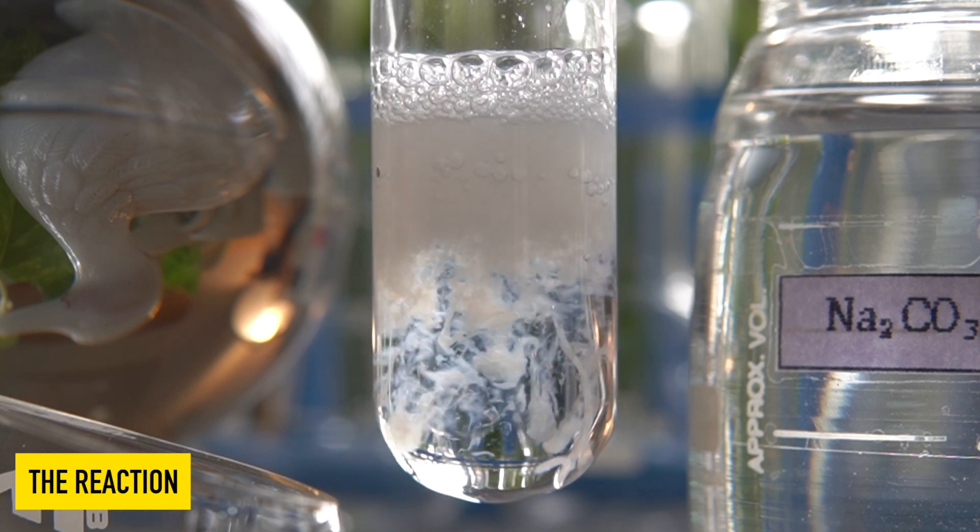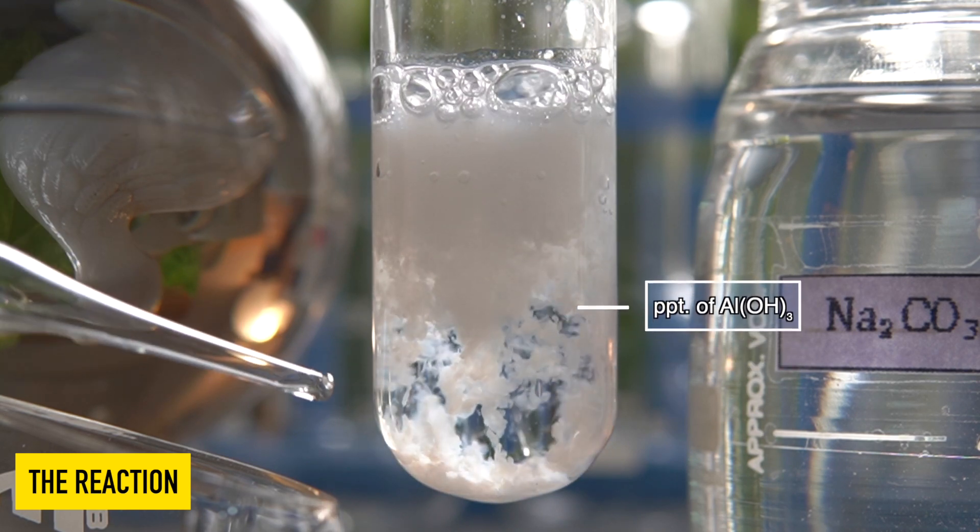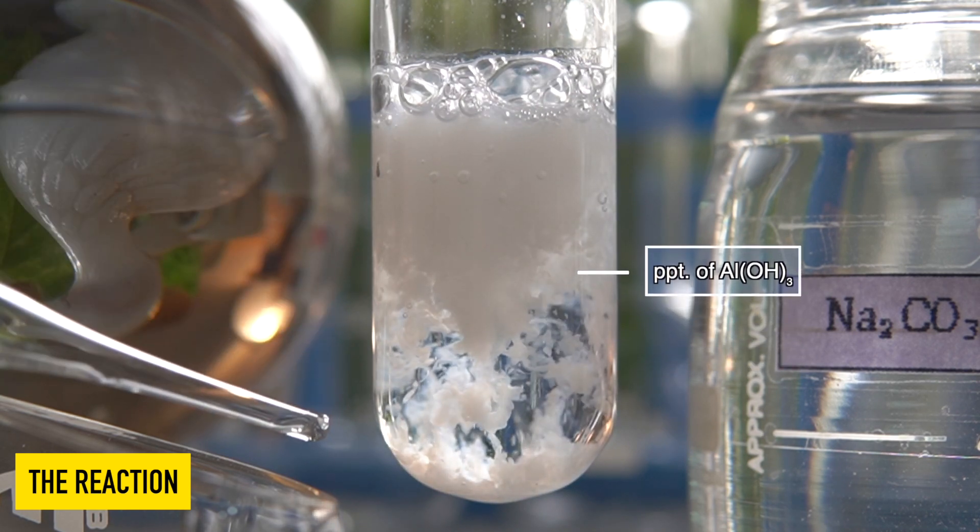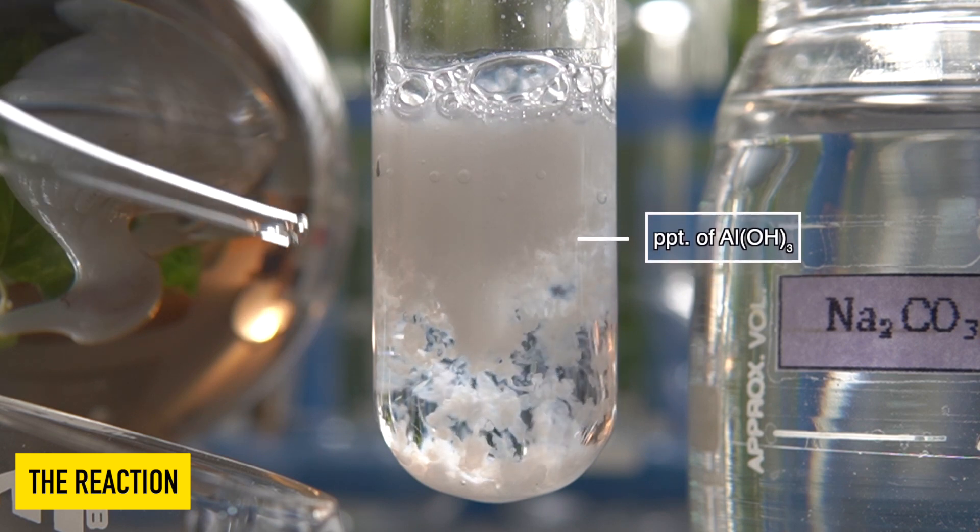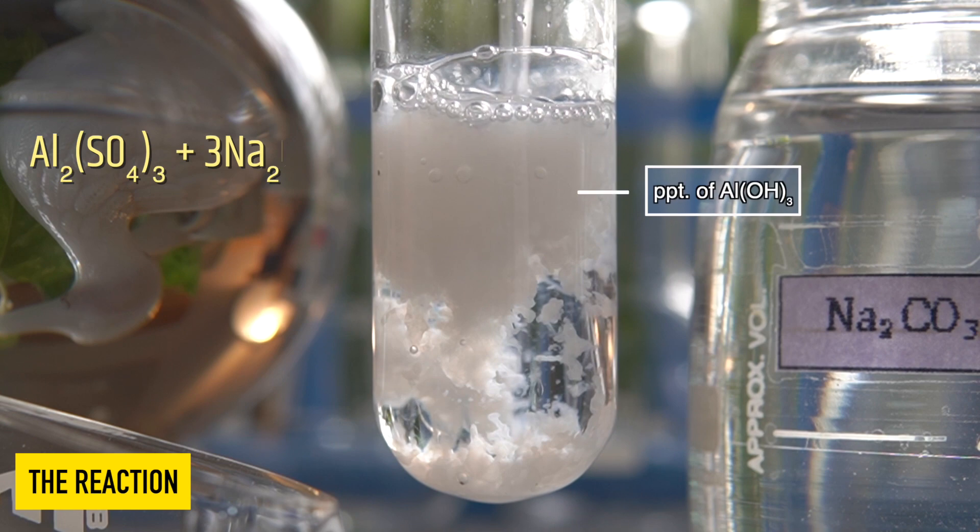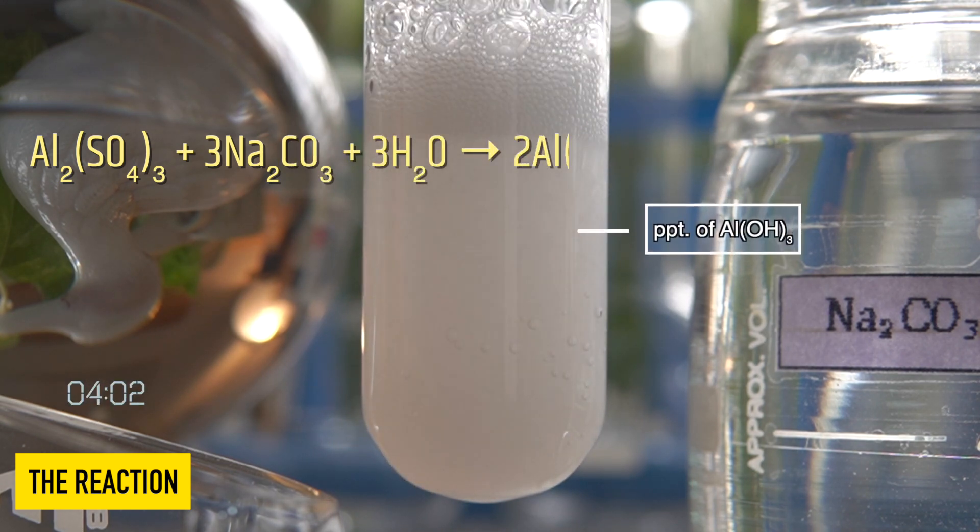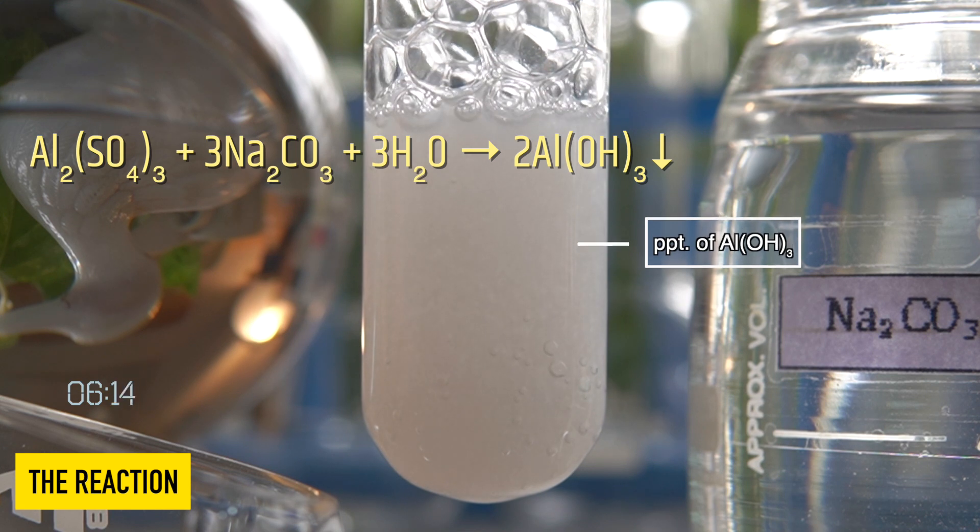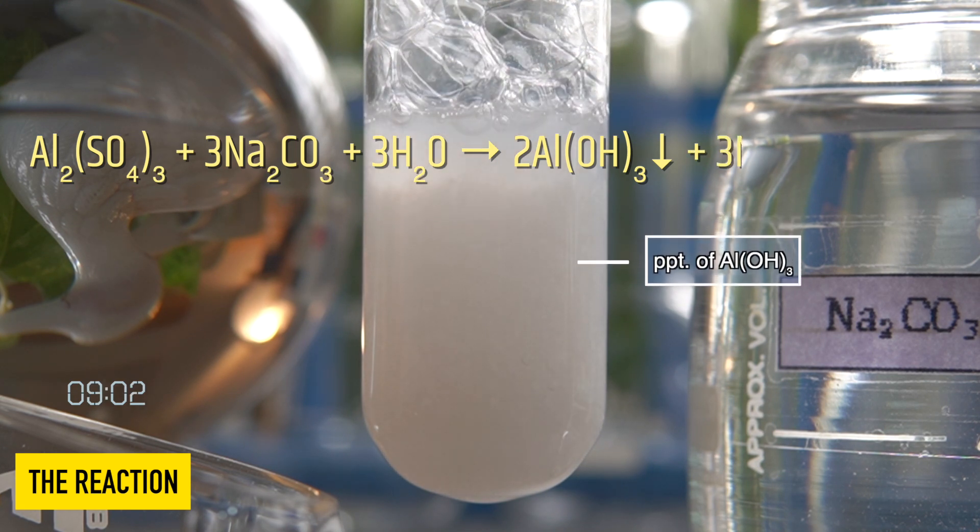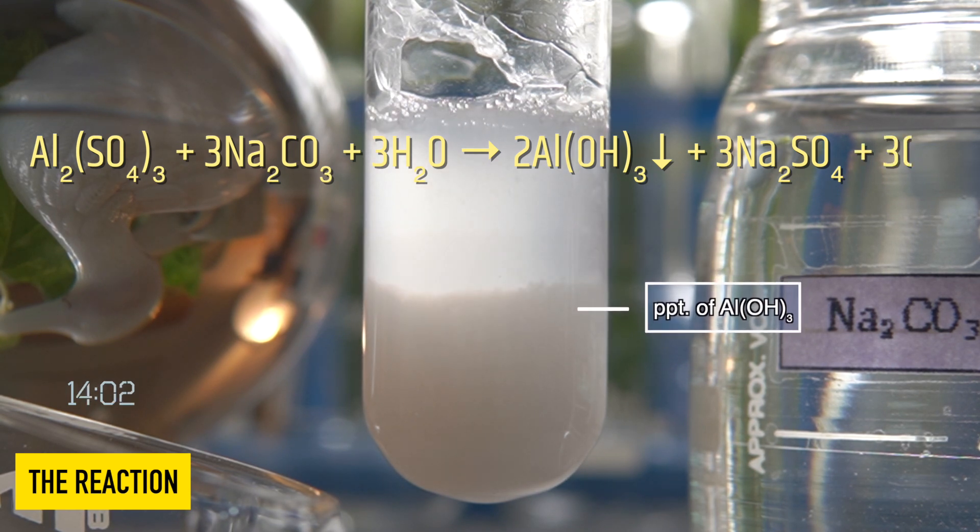The white gelatinous precipitate that has been formed inside the test tube is nothing but aluminum hydroxide. So in this reaction, aluminum sulfate reacts with sodium carbonate to produce a white gelatinous precipitate of aluminum hydroxide along with sodium sulfate and carbon dioxide gas.